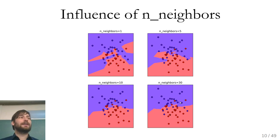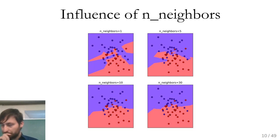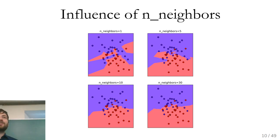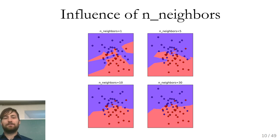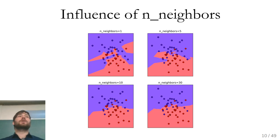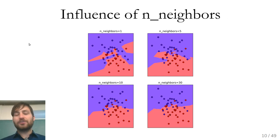If you increase the number of neighbors even more, at some point you'd just predict the majority class. With a hundred neighbors — probably all the data points — you'd always predict the same thing. So more neighbors means a simpler decision boundary.